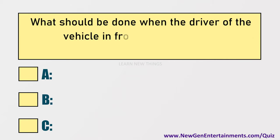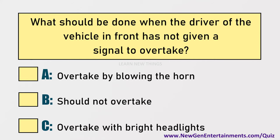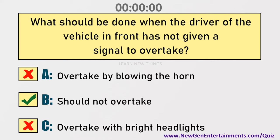What should be done when the driver of the vehicle in front has not given a signal to overtake? Options are: A) Overtake by blowing the horn, B) Should not overtake, C) Overtake with bright headlights. Answer: Option B, Should not overtake.